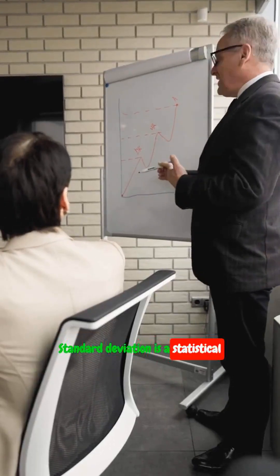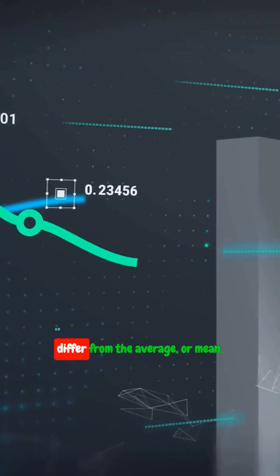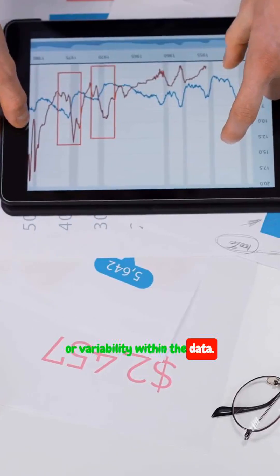Standard deviation is a statistical measure that indicates how much the values in a data set differ from the average or mean. It helps us understand the spread or variability within the data.